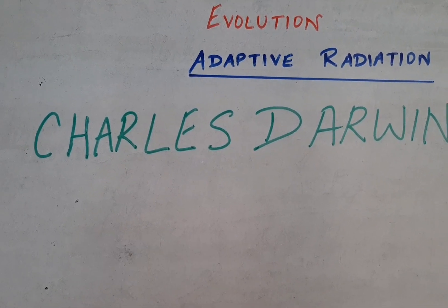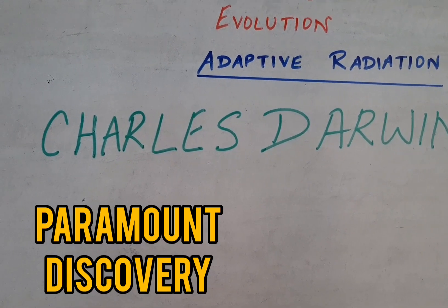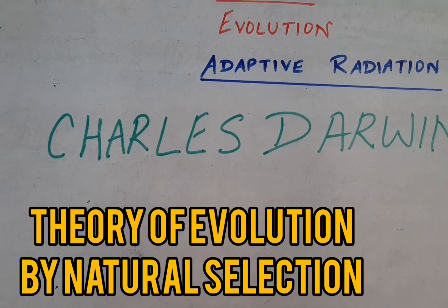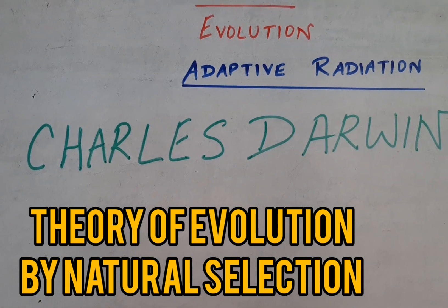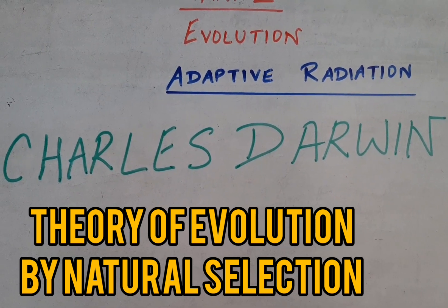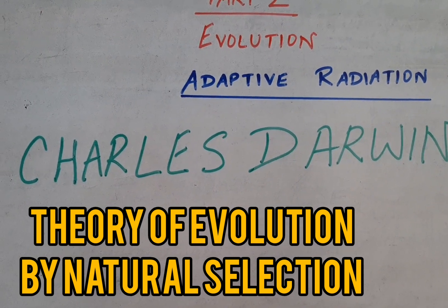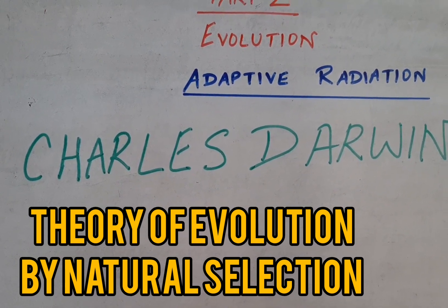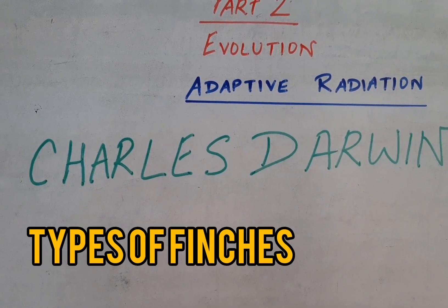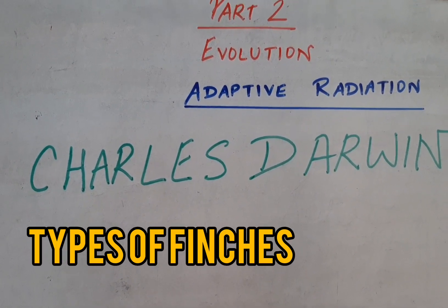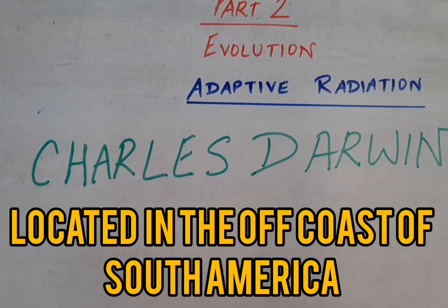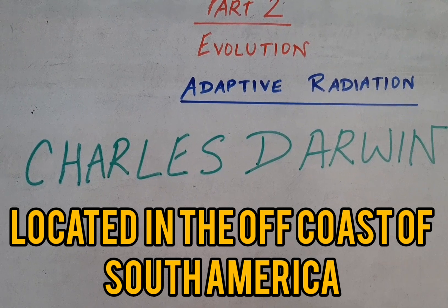His discoveries on this island were paramount to the development of his theory of evolution by natural selection. He developed the theory of evolution by natural selection after he discovered the various types of finches present on this island, which is located off the coast of the South American continent.